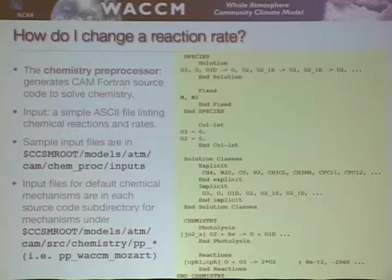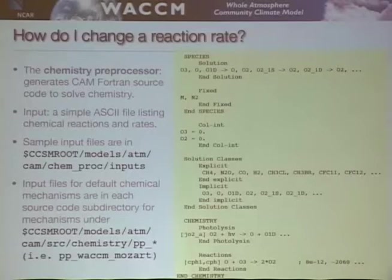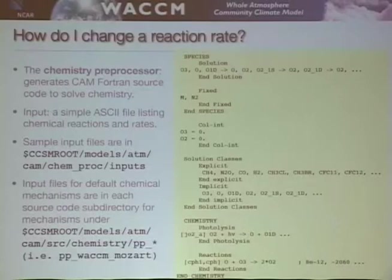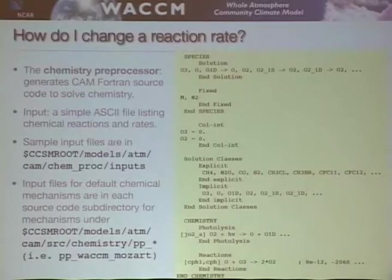One thing mentioned earlier is you might want to change the reaction rates in the model — say you're trying to solve the ozone deficit problem and want to try a new reaction rate or add a reaction. Chemistry within WACCM is different from CAM: in CAM it's specified chemistry, but within WACCM it's solved interactively. In that situation, you provide a preprocessor input file that is run at build time, which generates source code to solve the reactions. To change chemistry, you currently have to do a configure -clean_all, essentially erasing your whole source tree, and then rebuild.